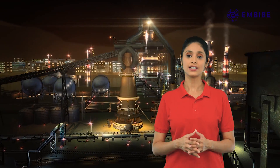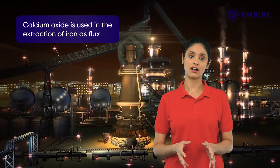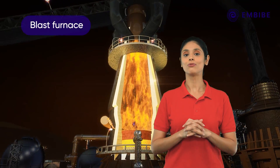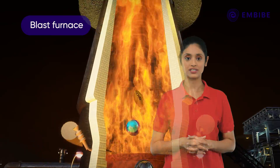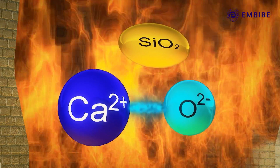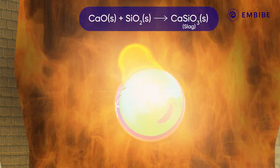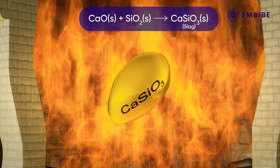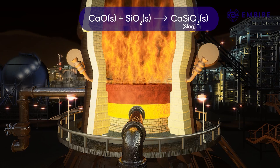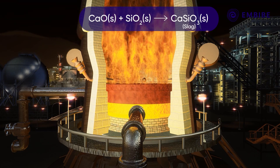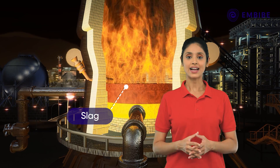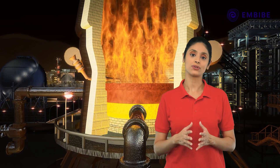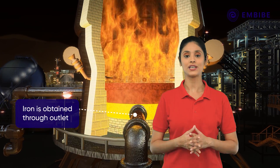Calcium oxide is also used as a flux in the extraction of metals like iron in a blast furnace. Here, calcium oxide combines with the impurity silicon dioxide and forms calcium silicate, called slag. Slag floats on the surface and is easily removed through the outlet, and iron is obtained.